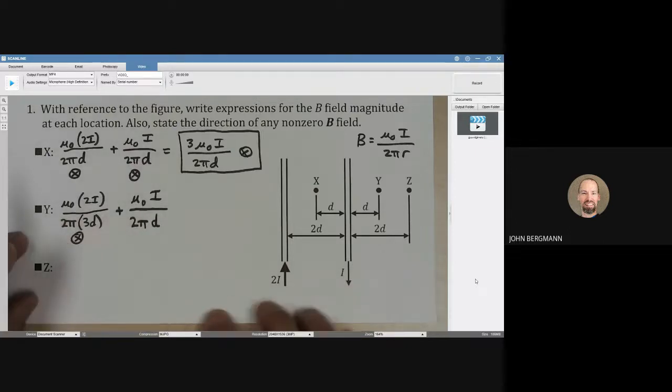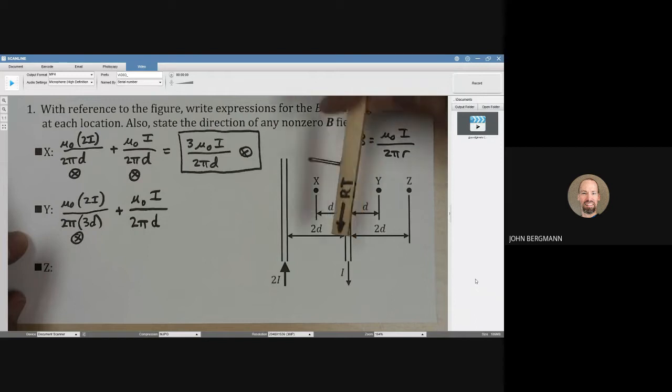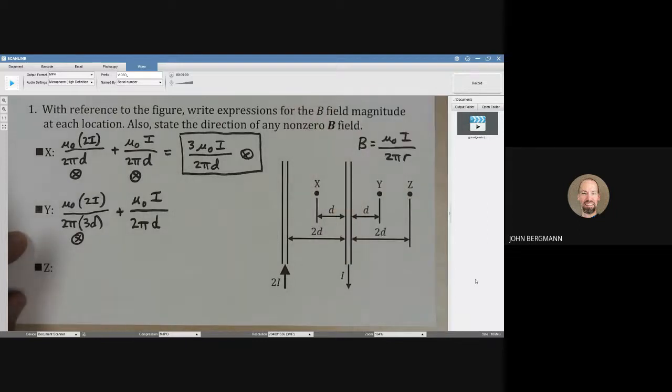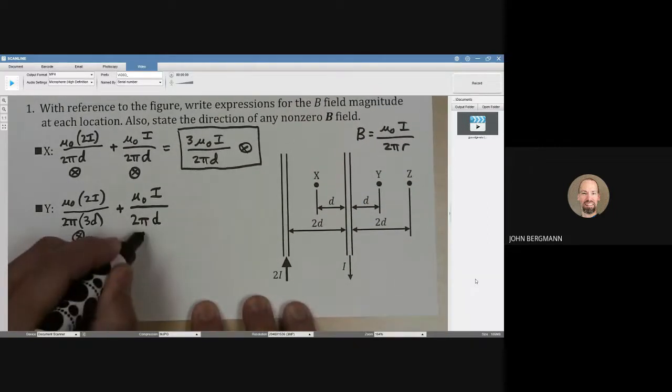And in what direction does that act according to our right-hand rule? We put our right thumb in the direction that the current is going at point y. Look at my fingers. Can you see how they're coming towards us? So that's going to be represented here by the dot.